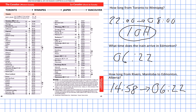Starting at 14:58 in Rivers and arriving in Edmonton at 6:22, the travel time is 15 hours and 24 minutes. I hope you found this video helpful — if not, please let me know how I can improve it.